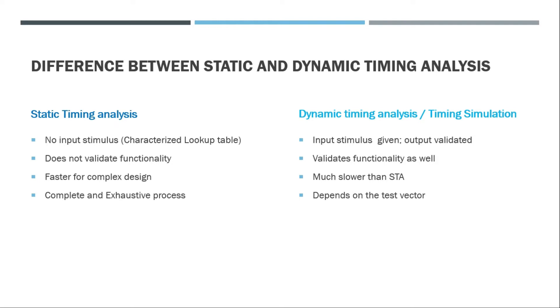And the next is the static timing analysis can handle the effects of crosstalk and on-chip variations pretty accurately, and these are extremely important in advanced technology nodes such as 7 nanometer, 5 nanometer, 3 nanometer and below. But the dynamic timing analysis or timing simulation cannot handle the effects of crosstalk and OCV that effectively.